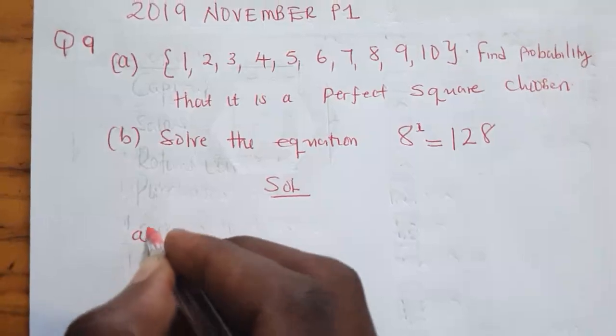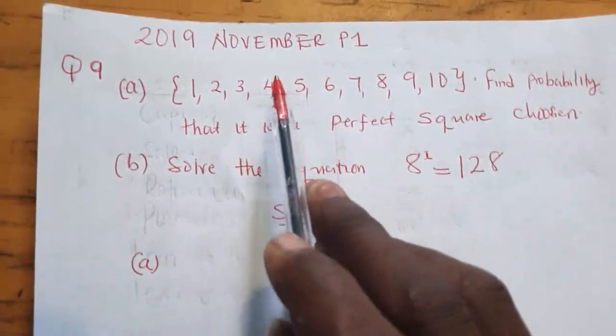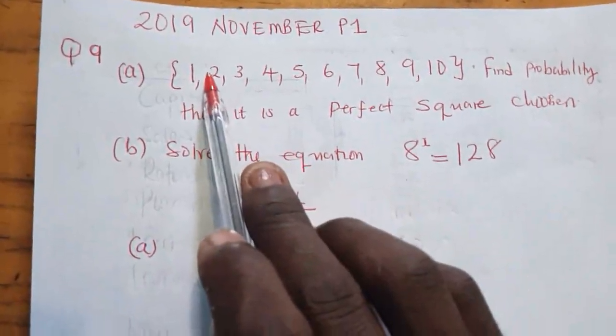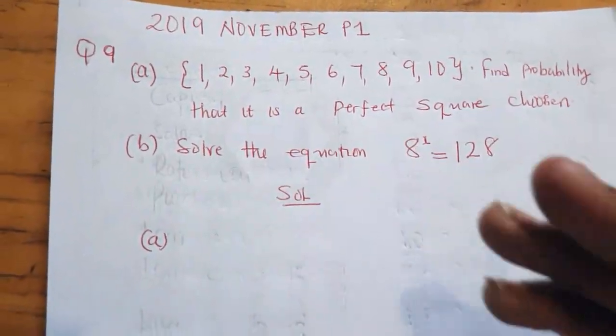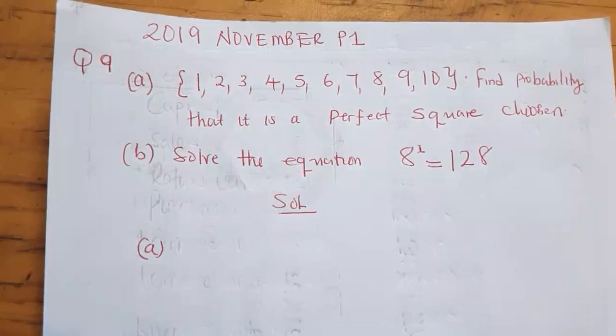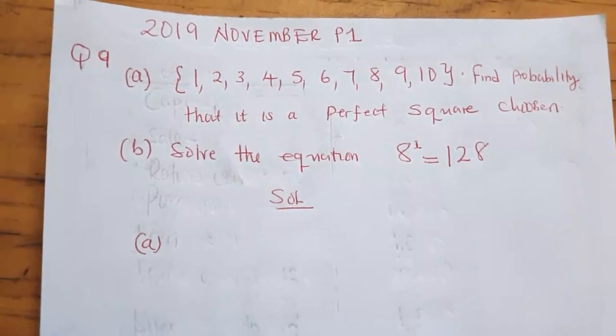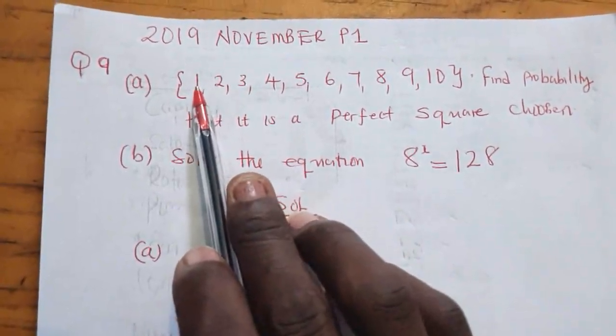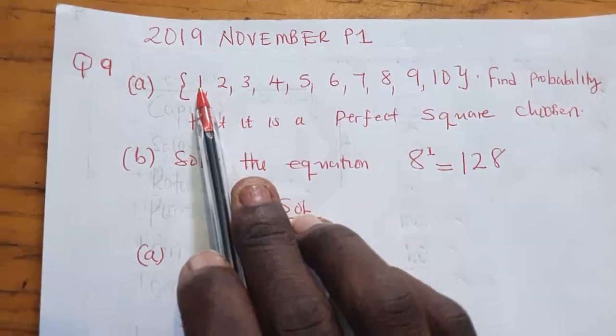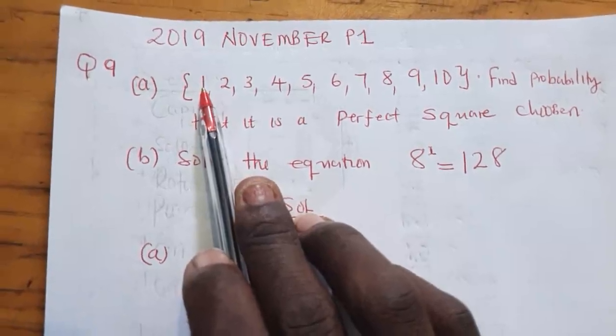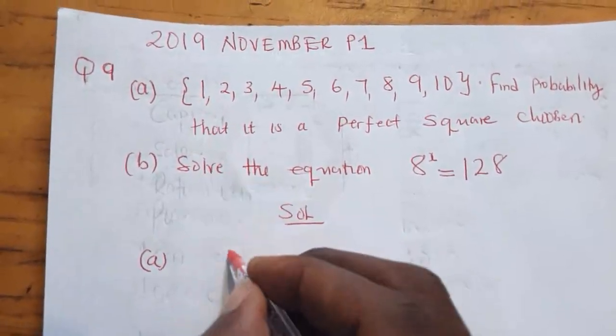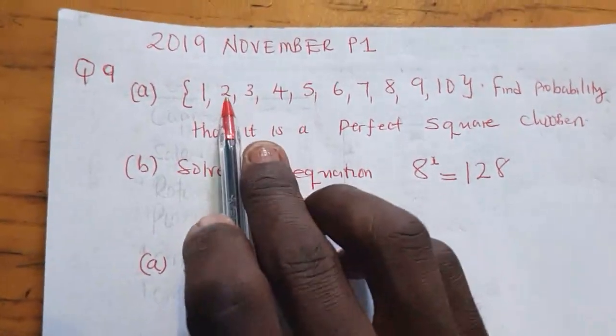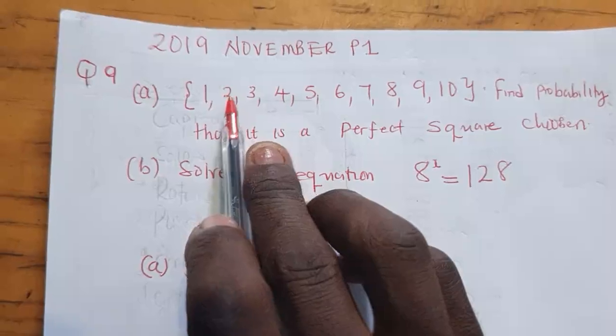So question A, a perfect square from here is just a number which you can get after a square. Now when I multiply 1 by 1, 1 squared, to give me 1. So 1 is a number. What number do I get when I square to 4?